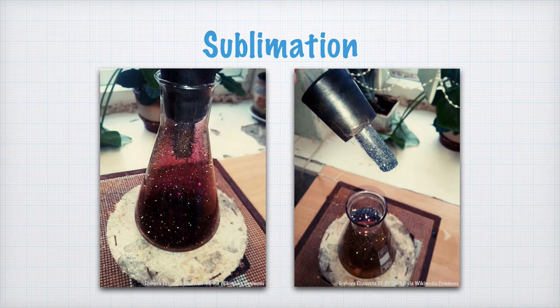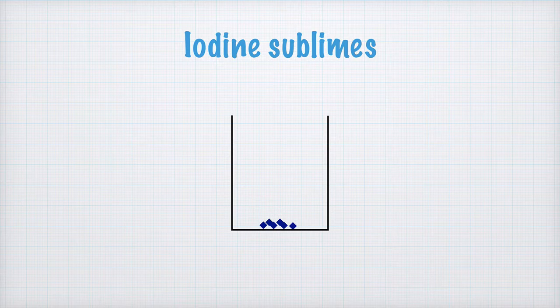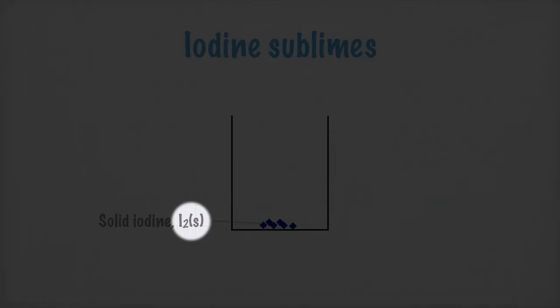Now, it's time for you to draw something in your notes too. First, we write that iodine sublimes, and then we draw a beaker like this, in which we put some iodine crystals. Solid iodine is written like this with chemical symbols, I2. The indexed 2 indicates that two iodine atoms together form an iodine molecule. And the S between the parentheses tells us that the iodine is in its solid form.